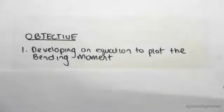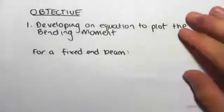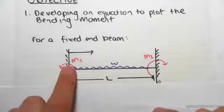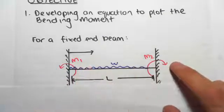So to do this for a fixed end beam - this is our case over here - we have fixed end moments M1 and M2, a UDL W, and the length is L.